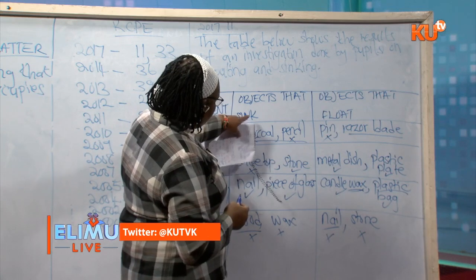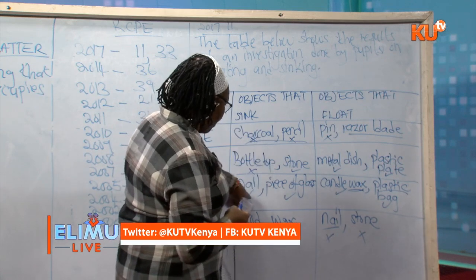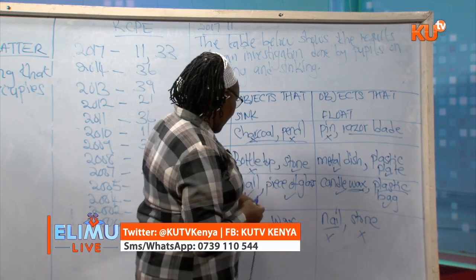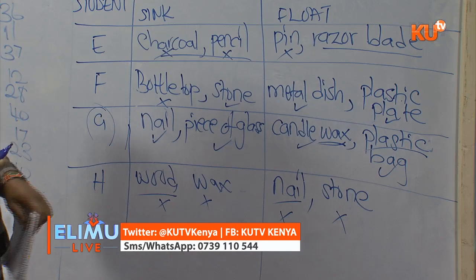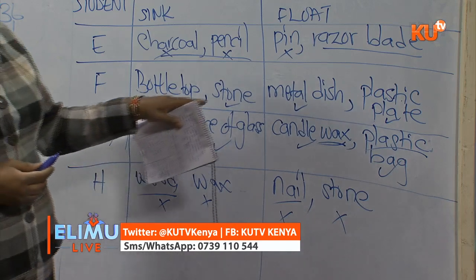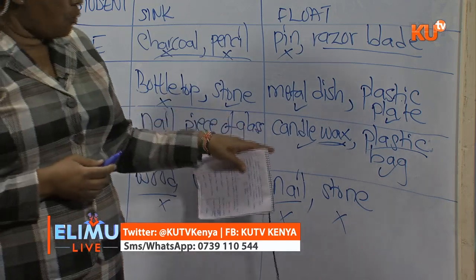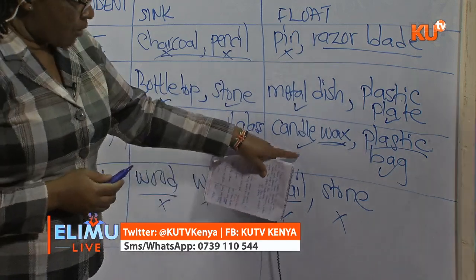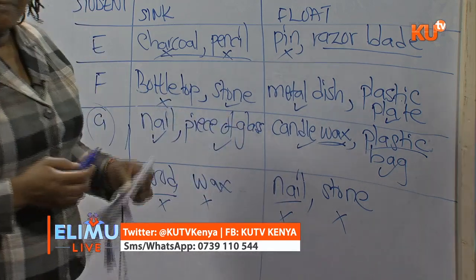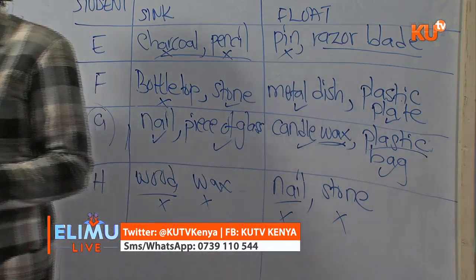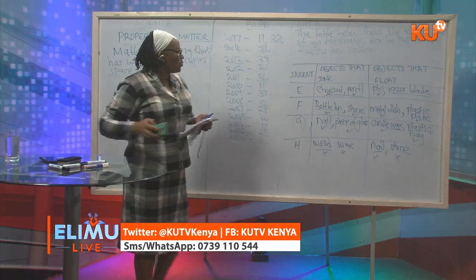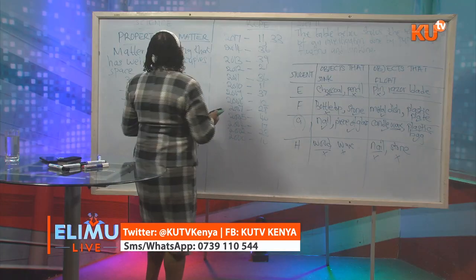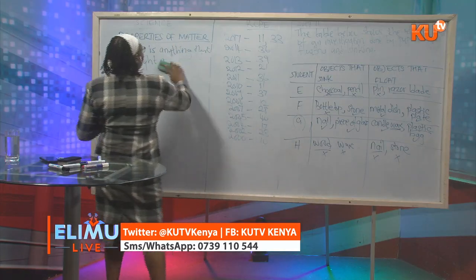Student G: a nail can sink because it is made of metal. A piece of glass is a sinker — glass whether big or small will sink. Candle wax is a floater because of its material. A plastic bag floats because of its material. So Student G recorded the correct observation.